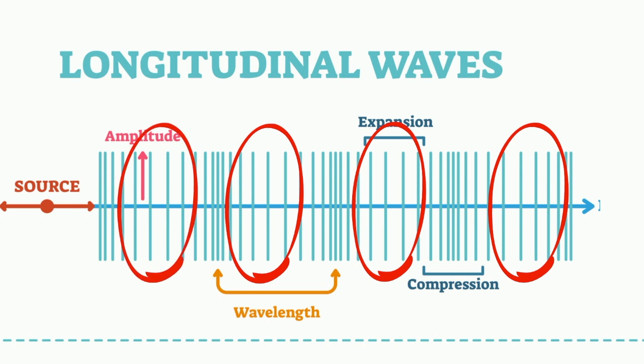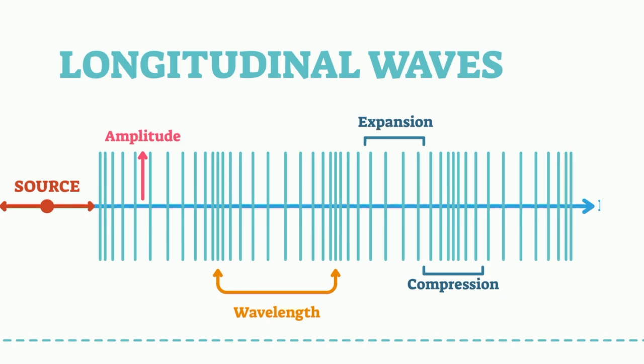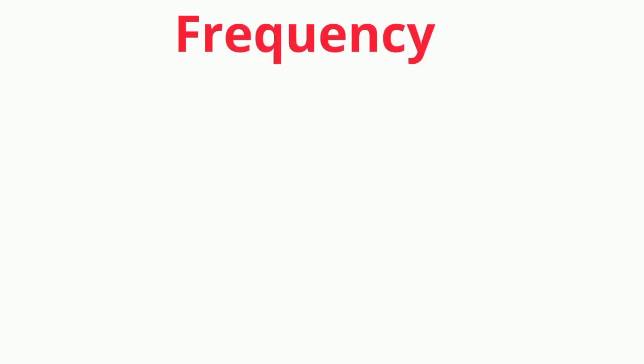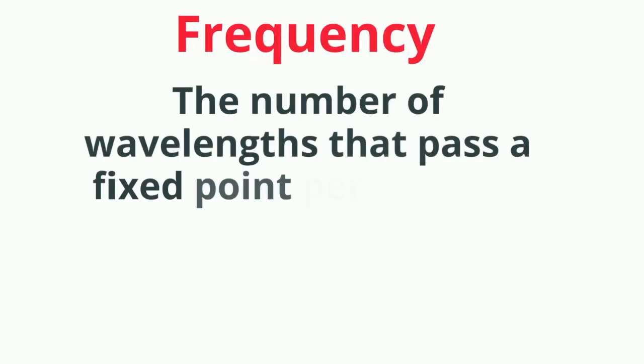The wavelength measurement is made by measuring the distance from a compression to the next compression or from rarefraction to the next rarefraction. The frequency of a longitudinal wave is the number of wavelengths that pass a fixed point per second.